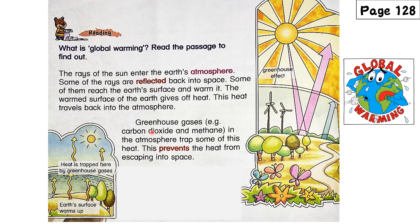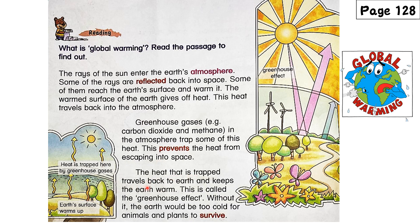In the atmosphere, there are greenhouse gases called carbon dioxide (二氧化碳) and methane (甲烷). These gases trap some of the heat and prevent it from going into space. The heat that is trapped travels back to earth and keeps it warm. This is called the greenhouse effect. Without it, the earth would be too cold for animals and plants to survive.